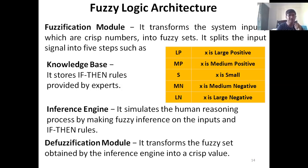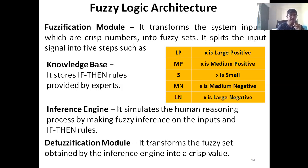Since the input was in crisp value form, which normally exists in the real world, and the real world data exists as crisp values, we need to convert the output back into a form which is understood in the real world. So we need a defuzzification module as output — the first step was the fuzzification module, and the last step is the defuzzification module.